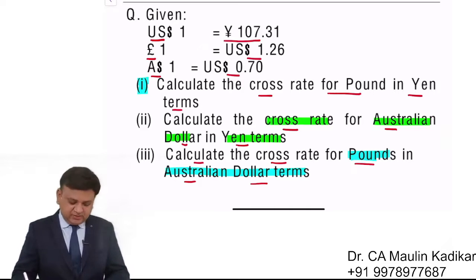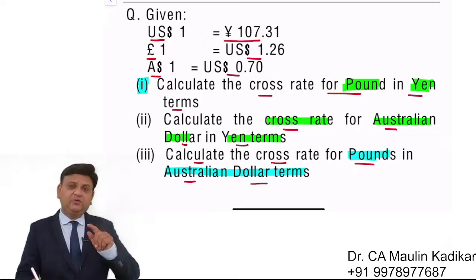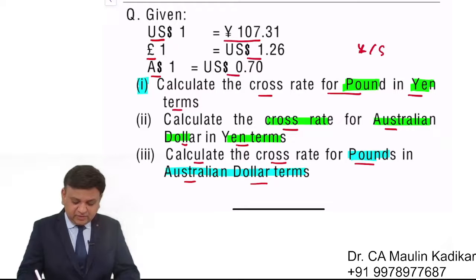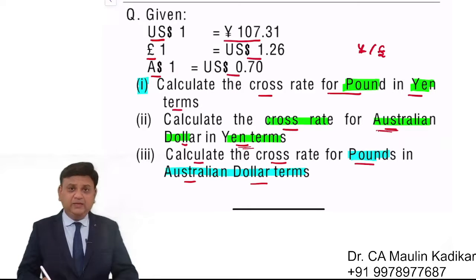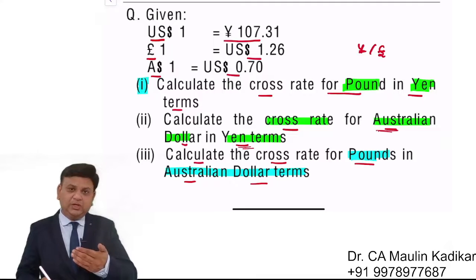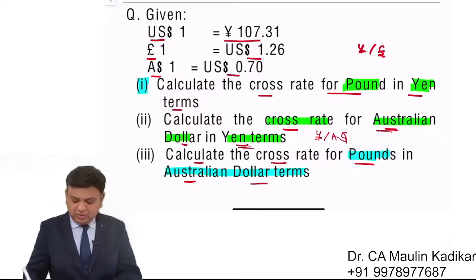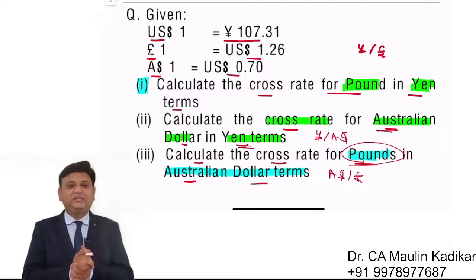So to summarize: the first question asks the cross rate for pound in yen terms — we calculate the price of pound in terms of yen. The second question finds the cross rate for Australian dollar in yen terms, giving yen per Australian dollar. The third question gives the cross rate for pound in Australian dollar currency, expressed as Australian dollar per pound. Thank you very much.